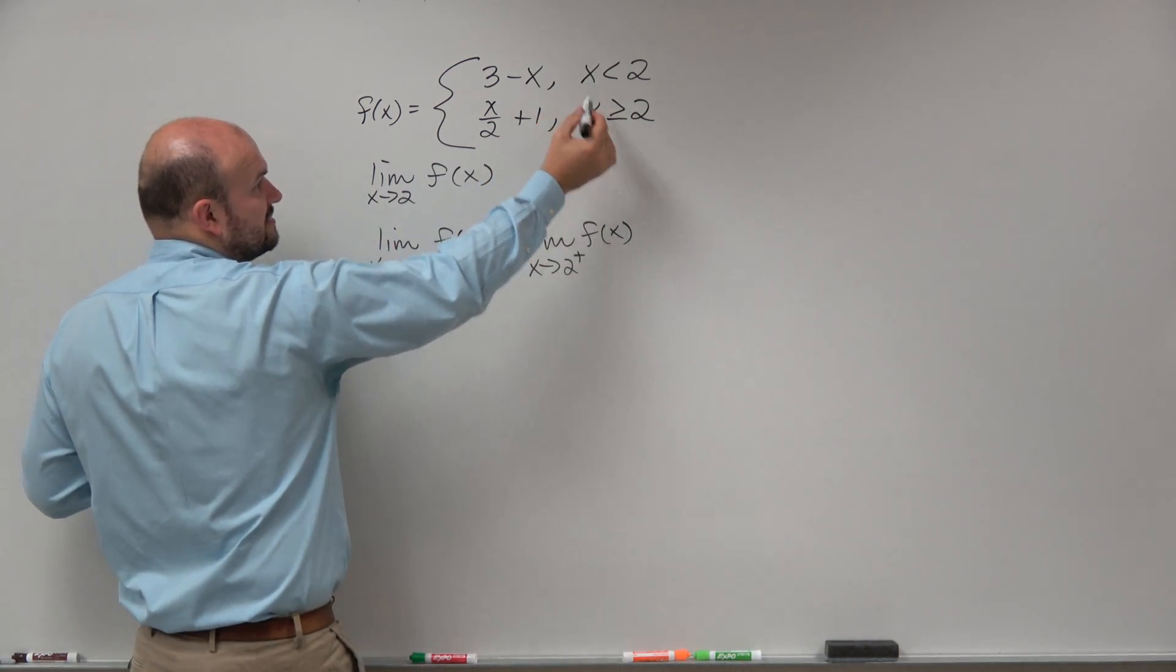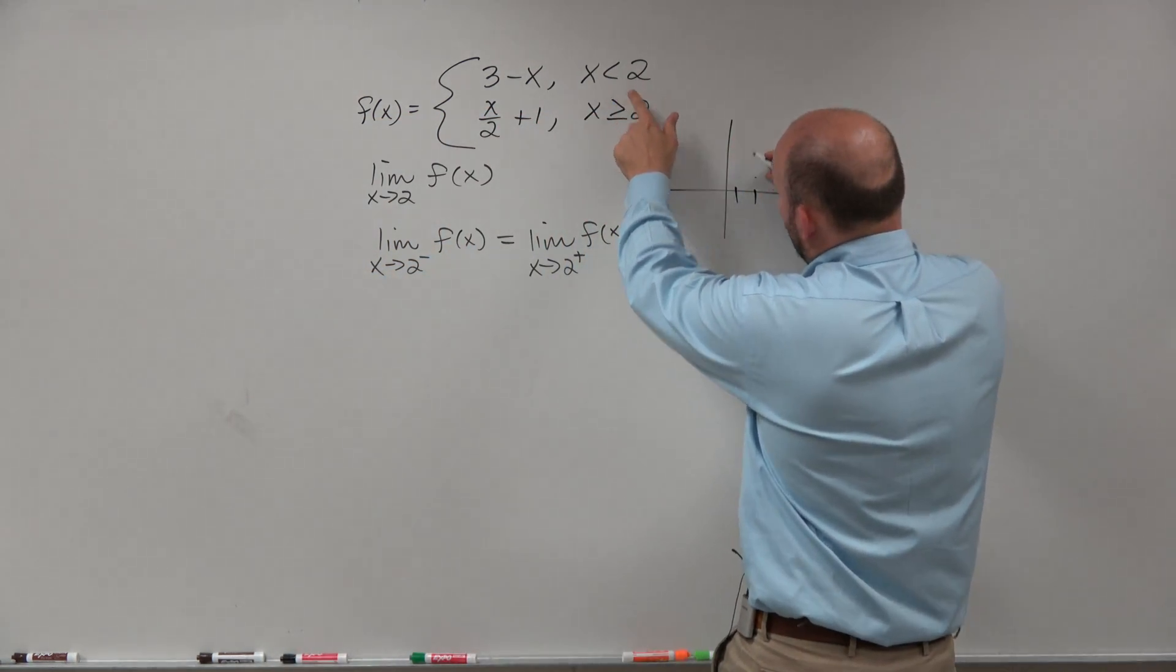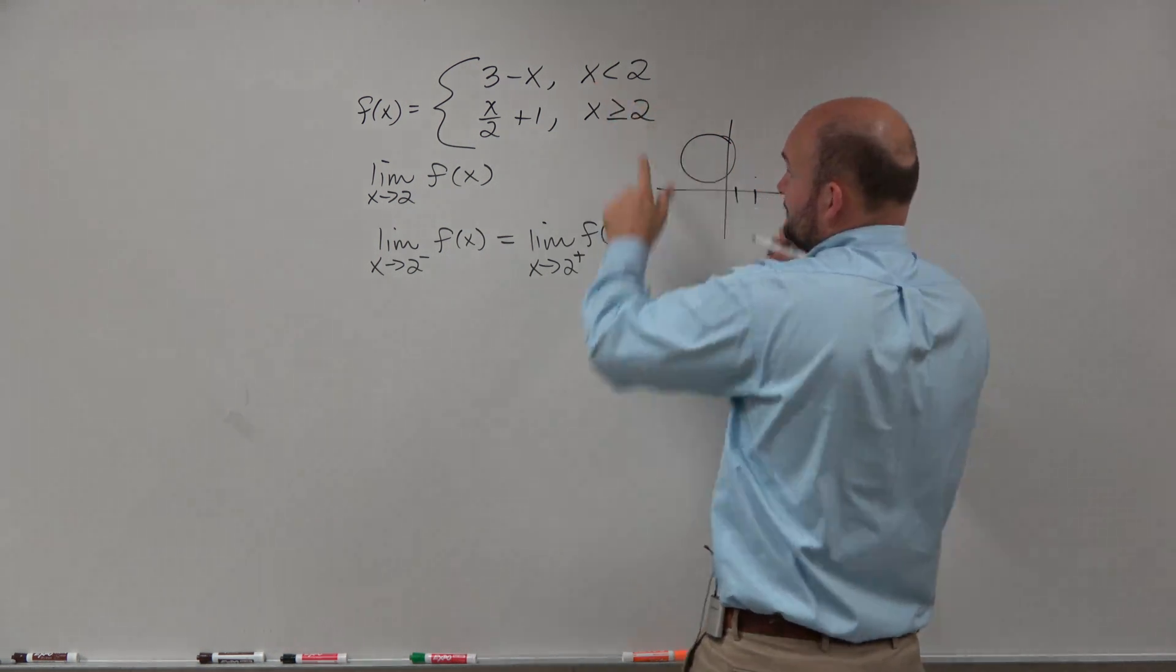So since here's wherever 2 is, this is telling us of a function that's to the left of 2. So that's going to be your left hand limit.